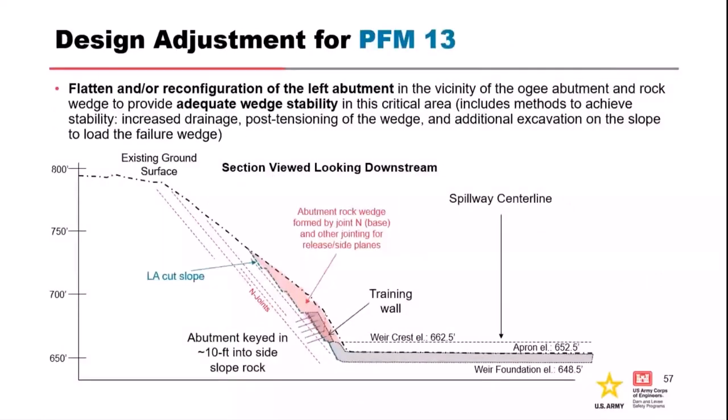We also added slope protection — regraded the slope a bit and benched it to reduce potential for large blocks to impact the training wall. The training wall was thickened on the left abutment and anchored to accommodate a wedge in that abutment so that during high flows and high rain events, you don't have compounding issues causing problems in the left abutment.